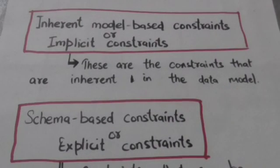First is inherent model-based constraints or implicit constraints. These are the constraints that are inherent in the data model. For example, the constraint that a relation cannot have duplicate tuples is an inherent constraint of the relational model.